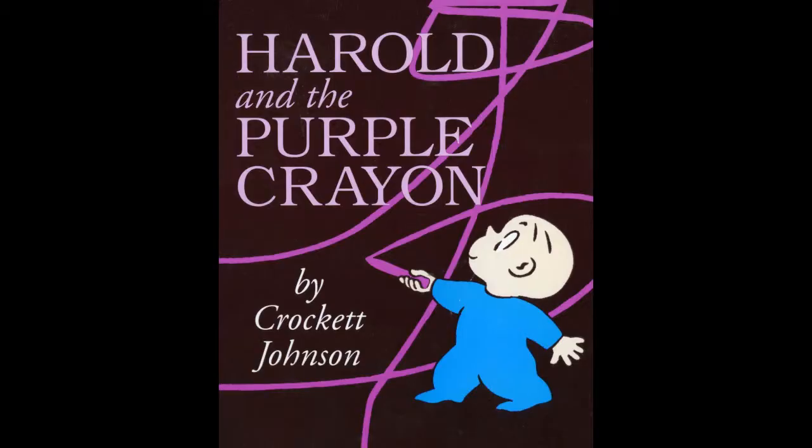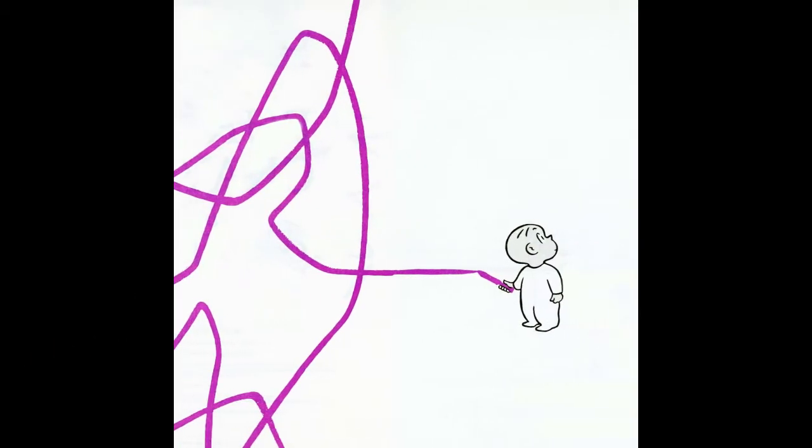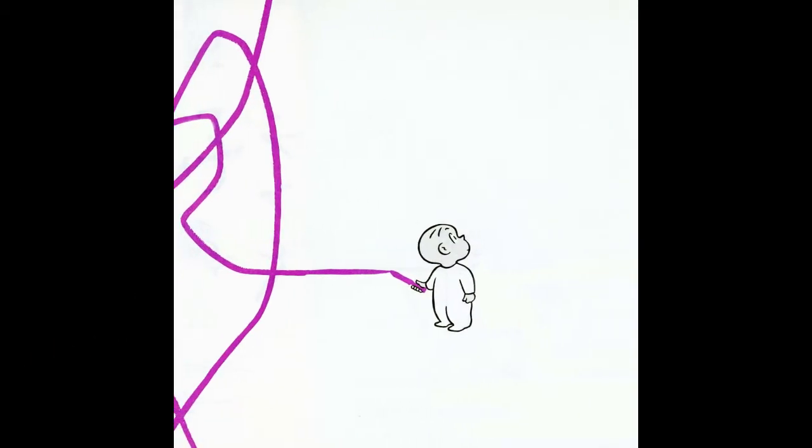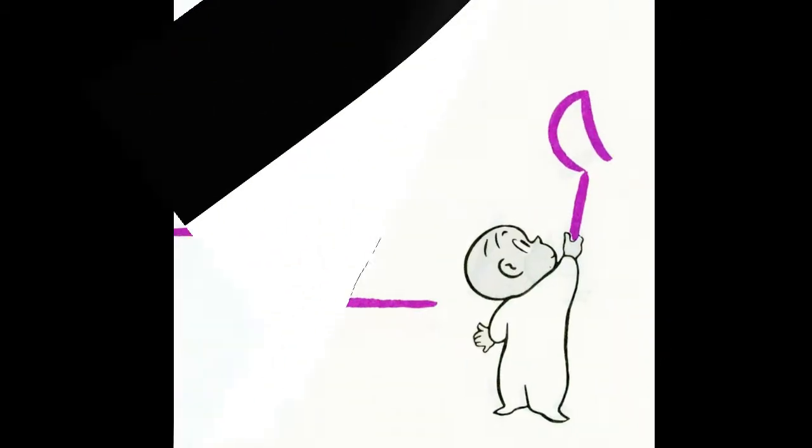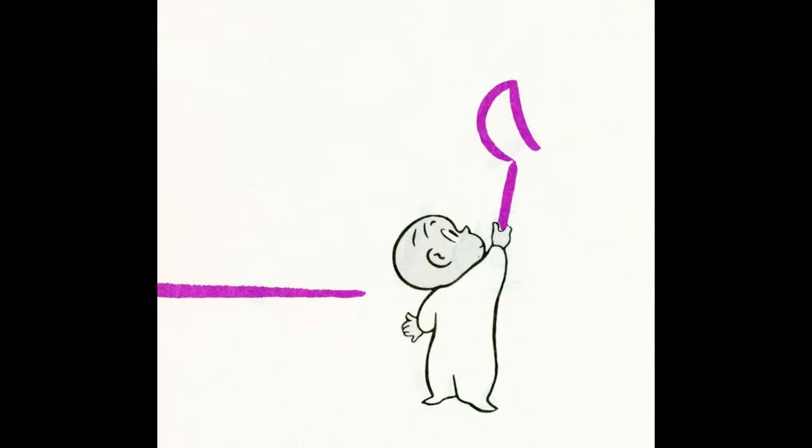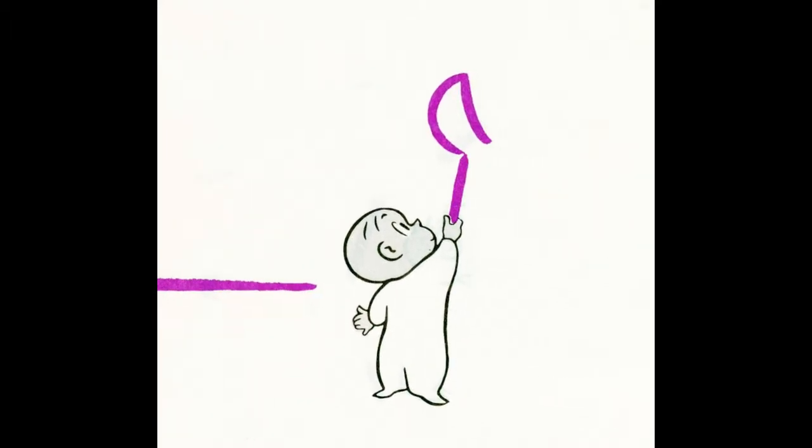Harold and the Purple Crayon by Crockett Johnson, narrated by me. One evening after thinking it over for some time, Harold decided to go for a walk in the moonlight. There wasn't any moon and Harold needed a moon for a walk in the moonlight.